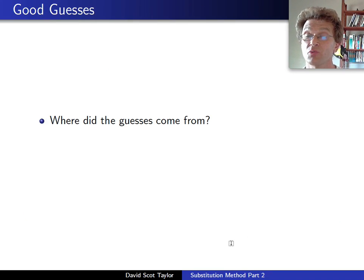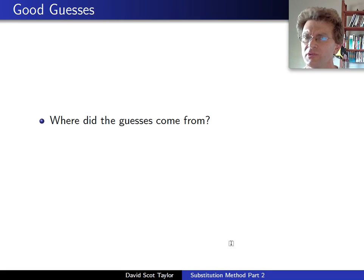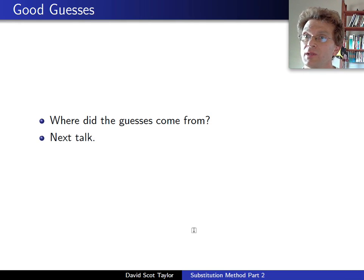The next question is: where did these guesses come from? Where did n², where did n — where did those things come from? One possibility is they're actual guesses; the other is that you worked it out a bit and have an educated guess. How can you get an educated guess? That'll be the next video. Thanks.